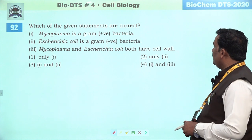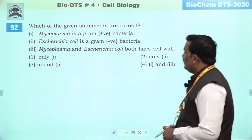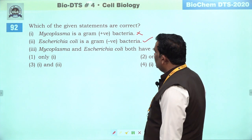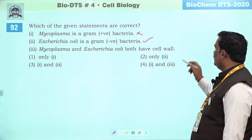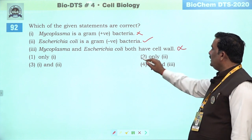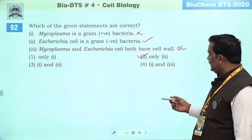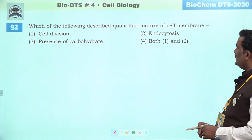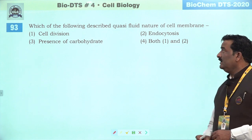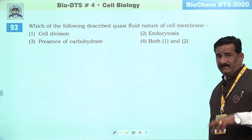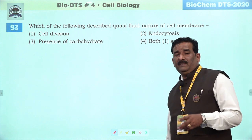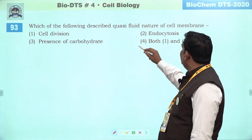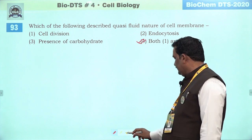Next question: which of the following described quasi fluid nature of cell membrane — cell division and cytosis — yeh do behtar vikalp hain. Aur iske alaawa bhi hai — cell junction hai, cell growth hai, secretion bhi hai. Isliye fourth ek right answer hai.